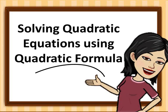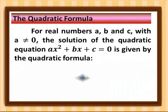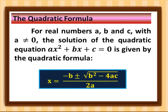So what is the quadratic formula? For real numbers a, b, and c with a not equal to zero, the solution of the quadratic equation ax² + bx + c = 0 is given by the quadratic formula: x = (−b ± √(b² − 4ac)) / 2a.